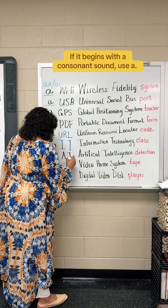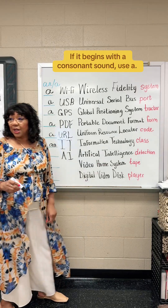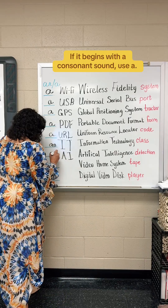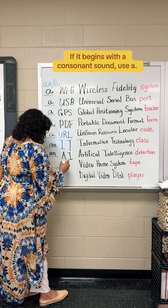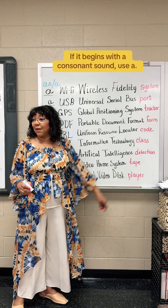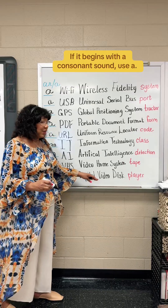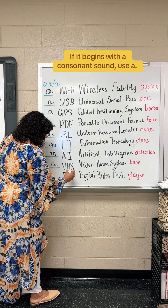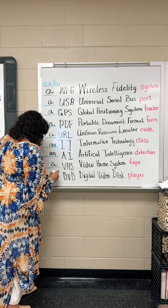Artificial intelligence detection — AI. Is it 'an AI detection' or 'a AI detection'? An AI detection. Video home system — have you ever heard of that? VHS tape. Is it 'an' or 'a' — a VHS tape? A. And the last one: digital video disc, DVD. Is it an or a DVD player? A DVD player.